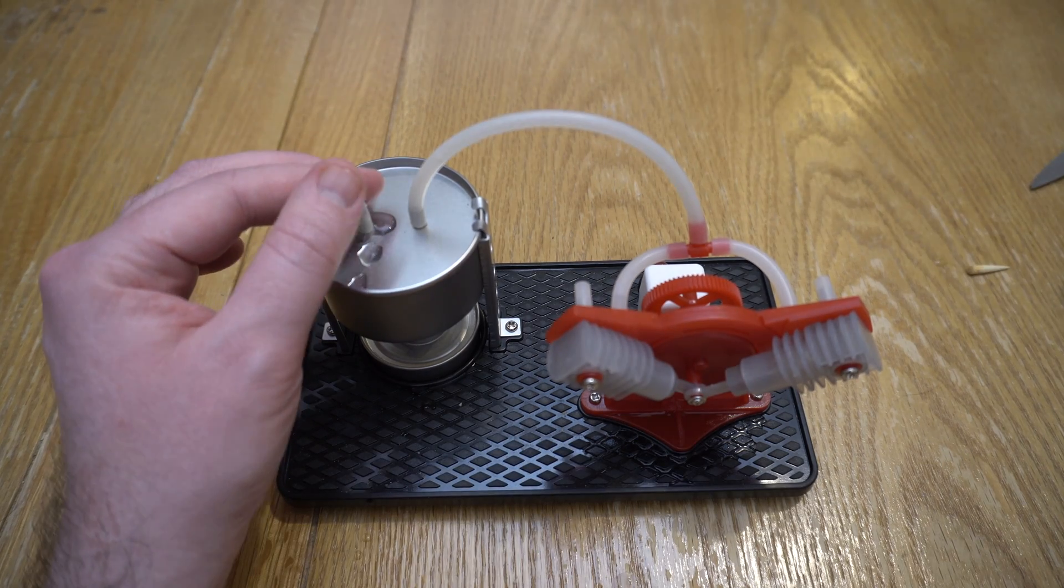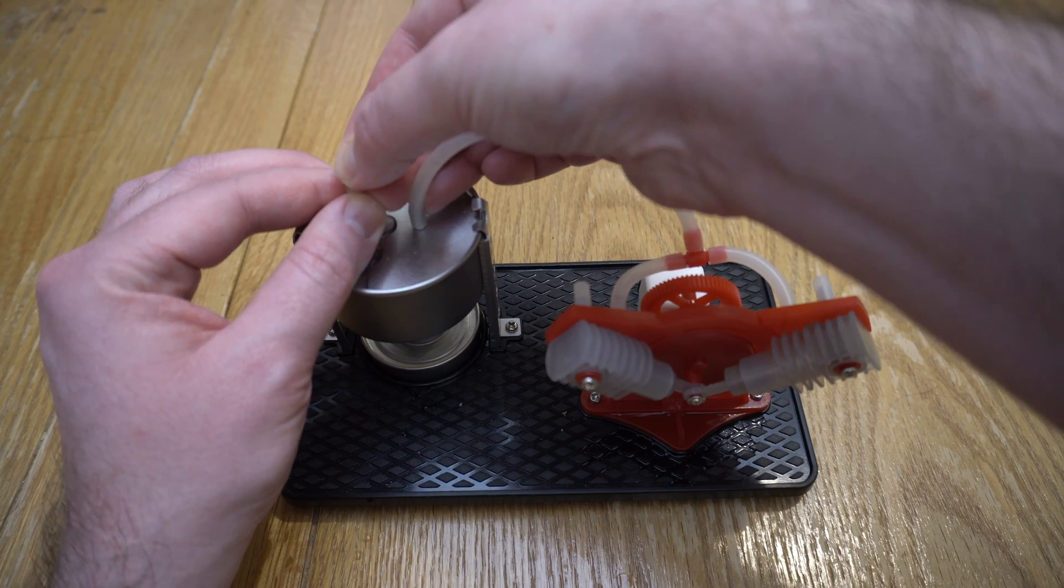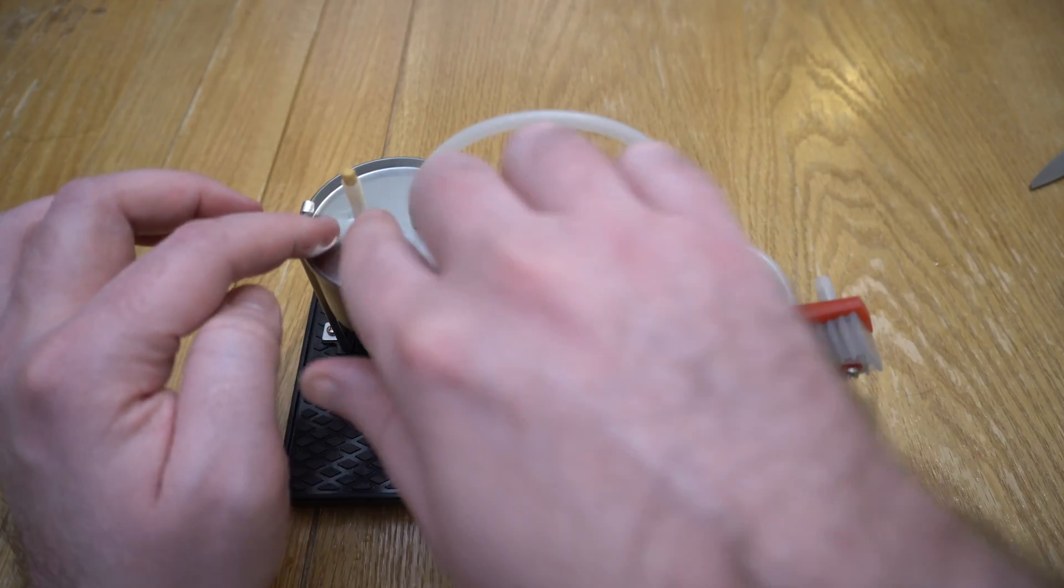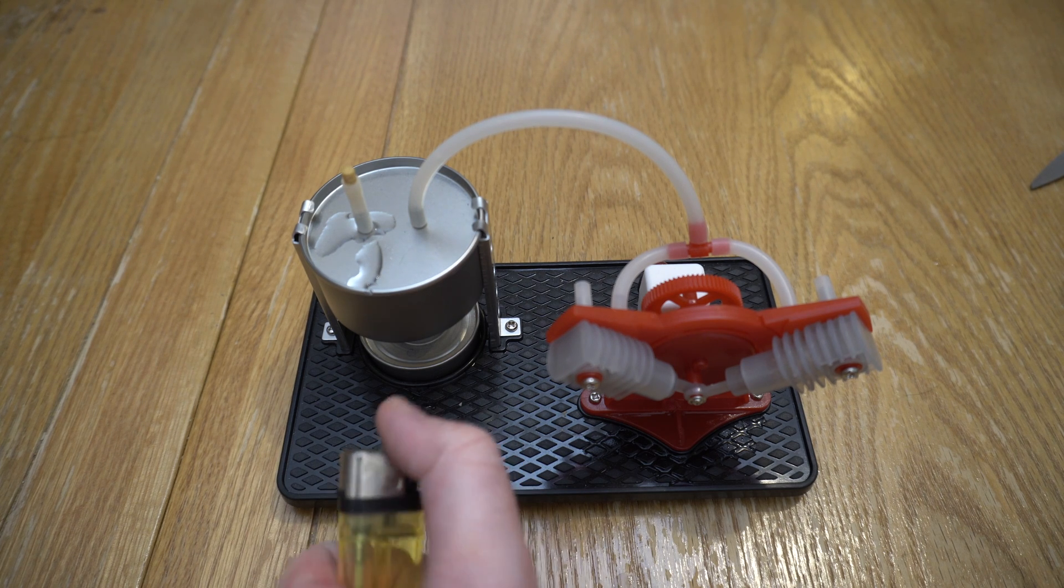Right. I've probably got enough water in there. I'm just going to use a little bit of a dowel to block that up so that that little inlet there is blocked, and then we're going to light the burner.